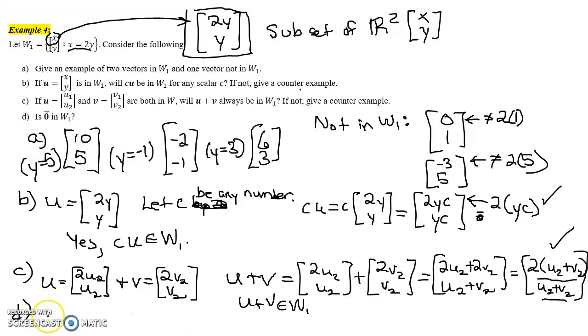Last question, is the zero vector in W₁? The zero vector in R² is [0, 0]. And notice that in this case, yes, the first component is 2 times the second component. It does satisfy that requirement to be in W₁. So the answer to d is yes, the zero vector does belong in W₁.